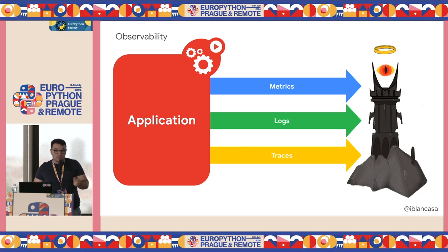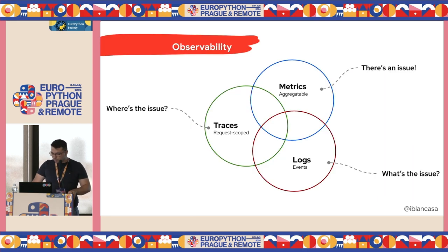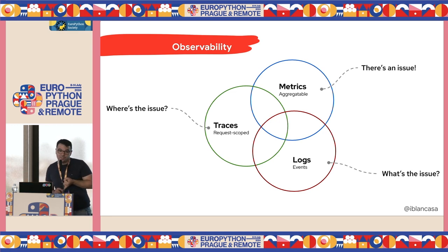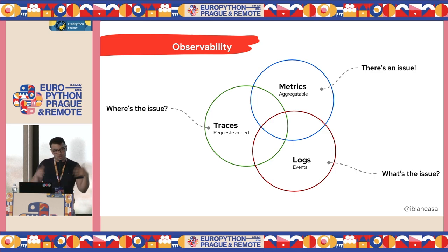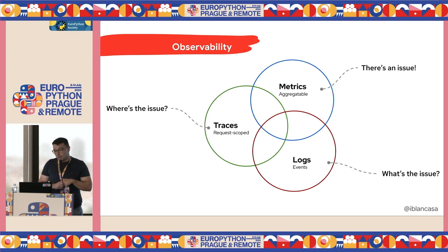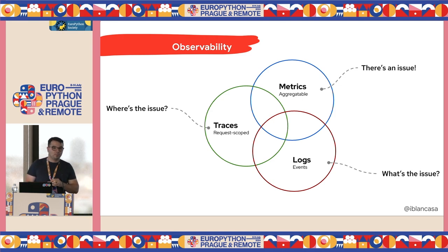So what we are talking about is observability — sending a bunch of data so we can have dashboards to give to our manager, because managers love dashboards, and so we can correlate and see exactly what's happening in our application. I love how Wikipedia describes observability: a system is observable when you can infer the internal state of the system from its outputs. So with metrics you see there is an issue; with logs, what the issue is; and with traces, where exactly the issue is. These are the three pillars of observability.